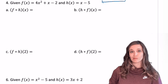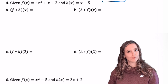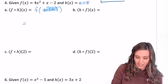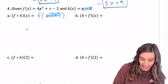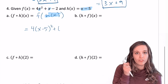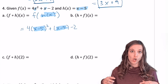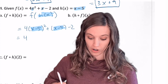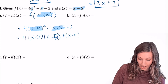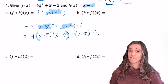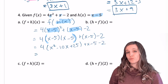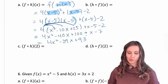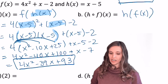Now with new functions: f of x is 4x squared plus x minus 2, and h of x is x minus 5. For f of h of x, the input is h of x, so we plug x minus 5 into f wherever x appears — in both spots. For x minus 5 squared, don't skip ahead — multiply x minus 5 times x minus 5 first, then distribute the 4. Combining like terms gives 4x squared minus 39x plus 93.